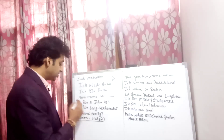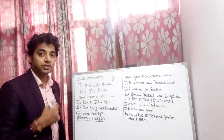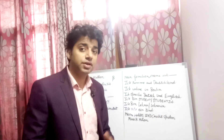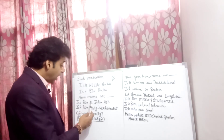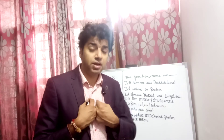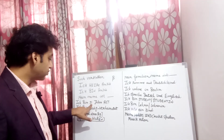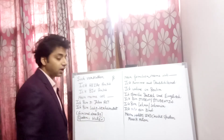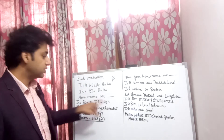Now, if I say my age — 'I am 31 years old' — I say 'Ich bin ein und dreißig Jahre alt.' The word 'ein und dreißig' is 31. You can go back to the counting module for reference. So: 'Ich bin ein und dreißig Jahre alt' means 'I am 31 years old.'